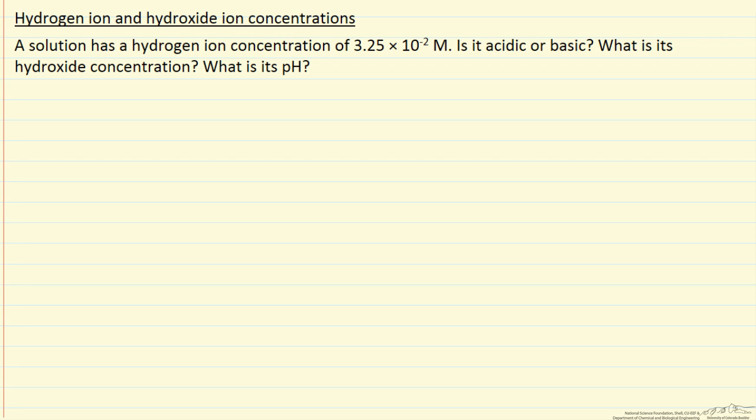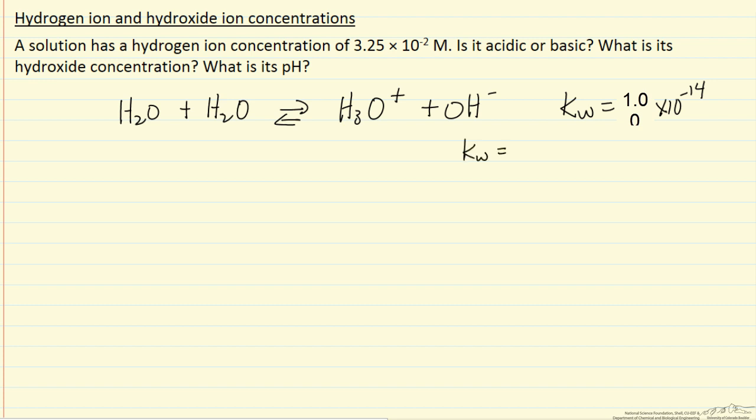And so essentially what we're looking at is that water will dissociate and be in equilibrium, and at 25 degrees C, kW, which is referred to as the ion product for water, is 1 times 10 to the minus 14. So let me write down what kW is equal to.